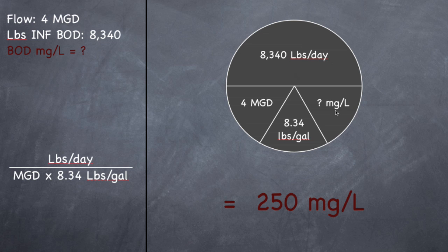Which was exactly the same question as the last one we did. When we wanted to find pounds per day, they gave us a concentration of 250 milligrams per liter. So that's the way the pie formula works. It's really helpful for struggling operators, so I recommend that you go this route when doing pounds. Very helpful. Alright, let's move on.